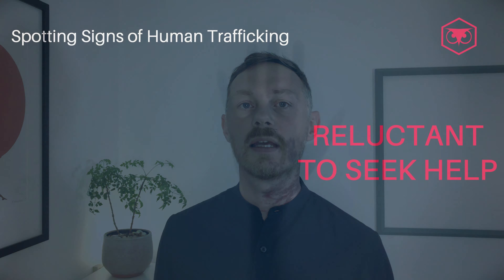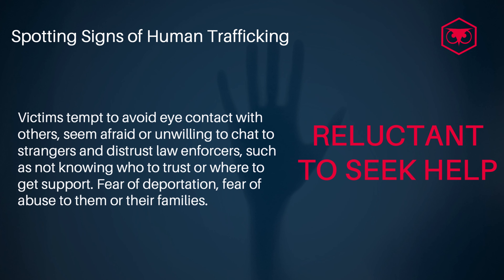The sixth and last sign is that victims will be reluctant to seek help. They will try to avoid eye contact and generally seem afraid or unwilling to chat to strangers, and they may distrust law enforcers. If you see someone displaying this type of behavior, it could be a sign of modern slavery and human trafficking. This is not a full list, but a guide to make you more aware of potential signs to spot these crimes within society.